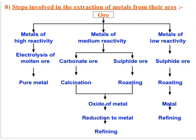The steps involved in extraction depend on the reactivity of the metal. Metals of high reactivity like potassium and calcium are obtained in pure form by electrolysis of molten ore. Metals of medium reactivity react with carbon to form carbonate ore or with sulfur to form sulfide ore; calcination is done for carbonate ore and roasting for sulfide ore, yielding the metal oxide, which is then reduced and refined. Metals of low reactivity like gold and silver are found as sulfides; roasting is done and then the metal is refined. These steps will be studied in detail in the next topic.